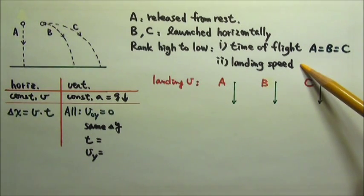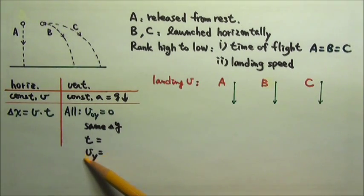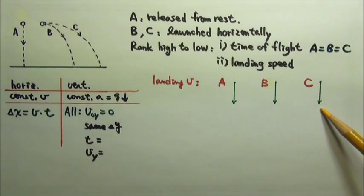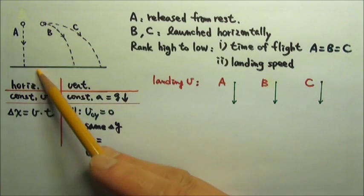Now let's compare the landing speed. A, B, C, they all have the same vertical landing velocity, however, they have different horizontal motion.